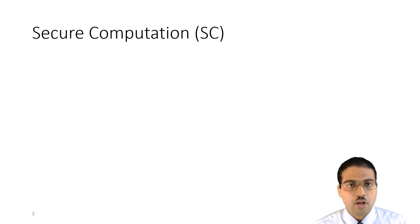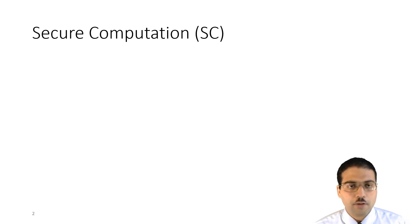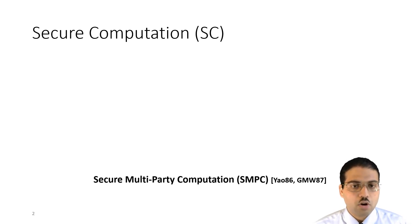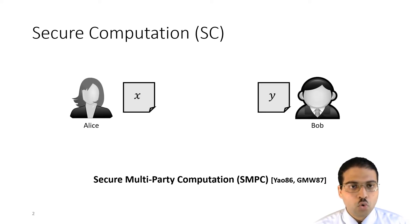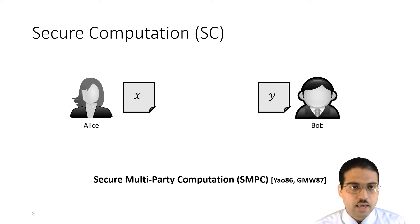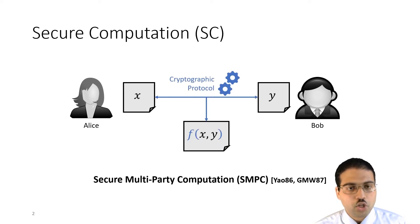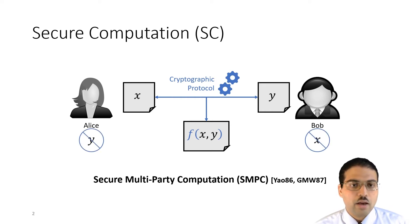Secure Computation refers to techniques for computing on encrypted data. I'm going to focus on a particular kind called Secure Multi-Party Computation, or SMPC. In SMPC, you have two or more parties — say Alice and Bob — who each have secret data, say X and Y. SMPC allows them to compute an arbitrary function f applied to their secret data, while guaranteeing that no party learns anything about the other party's secret data, except what is revealed by the output of the function f.